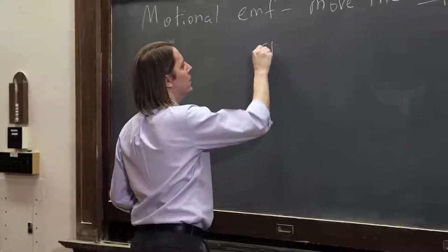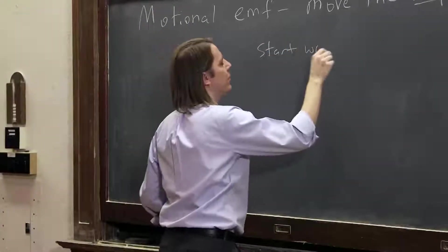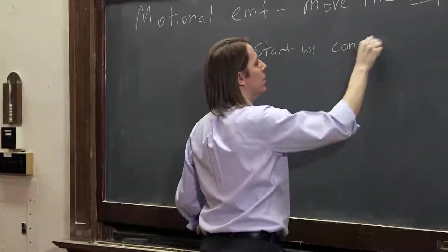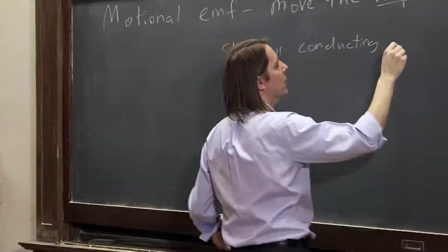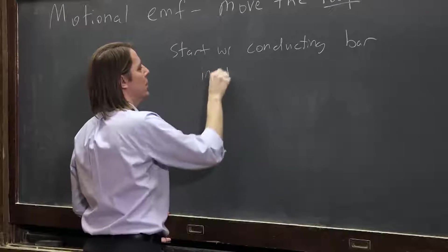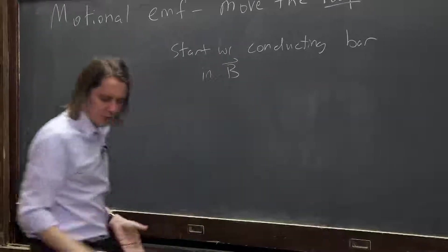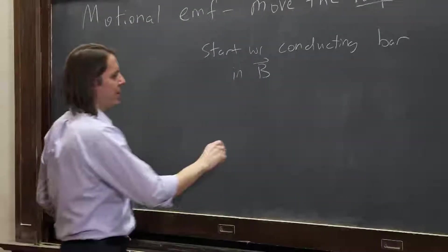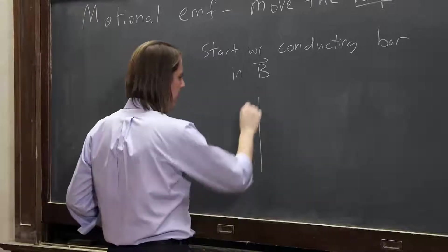Let's start with a conducting bar, or a metal bar in a B field. So we would want to think about this piece of metal, like this.